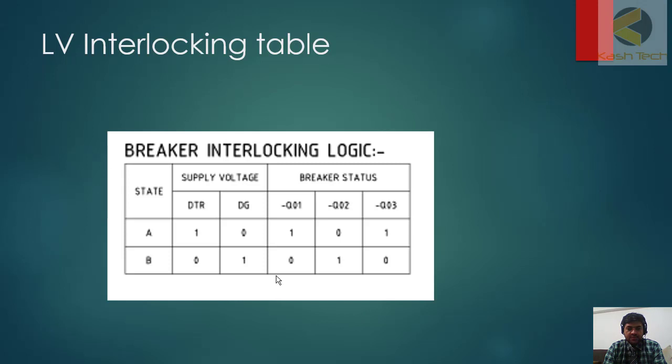DTR is distribution transformer, DG is diesel generator, Q01 is incomer for transformer, Q02 is incomer for generator. In first case, if supply is fed through transformer, transformer is on, generator will remain off, incomer one will remain closed, incomer two which is feeding diesel generator will remain off, and the coupler will remain closed. So all power of substation is fed through transformer.